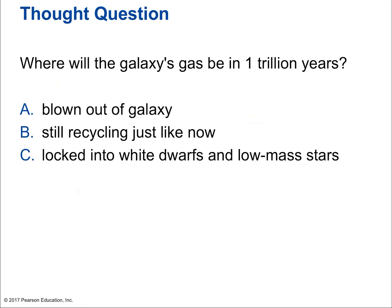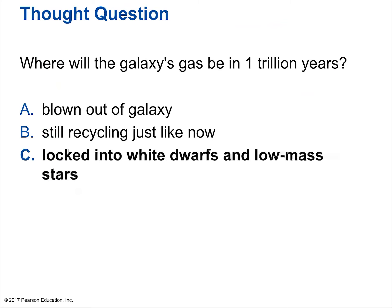Where will the galaxy's gas be in a trillion years? A trillion years is at least 500 times longer than the current age of the universe — an incredibly long time. Most of it will be locked in white dwarfs and low-mass stars, since those incredibly long-lived stars — living 30 to 150 billion years — will be all that's left. Eventually white dwarfs will radiate away all their energy and become crystalline black dwarfs, which are not at all like black holes — just cooled-off white dwarfs.